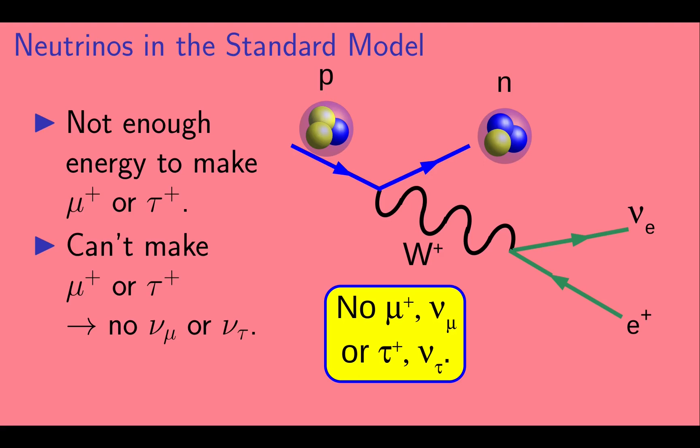So, since there isn't enough energy to make a muon or a tau, they aren't made in the Sun. And that means there aren't muon or tau neutrinos made either. So, to a very good approximation, all the neutrinos made in the Sun are of the electron type.